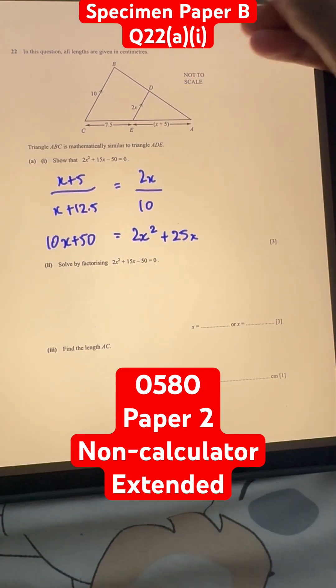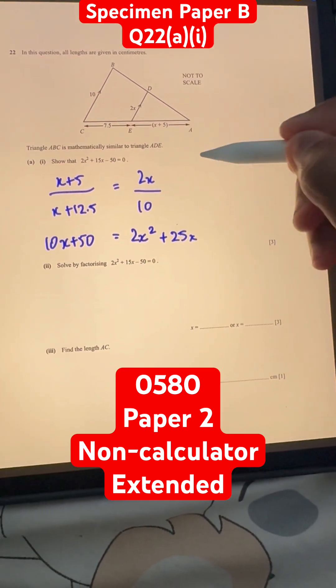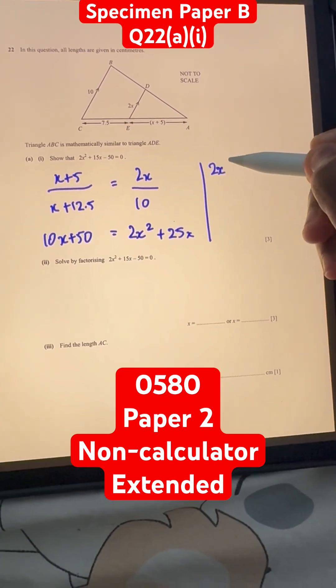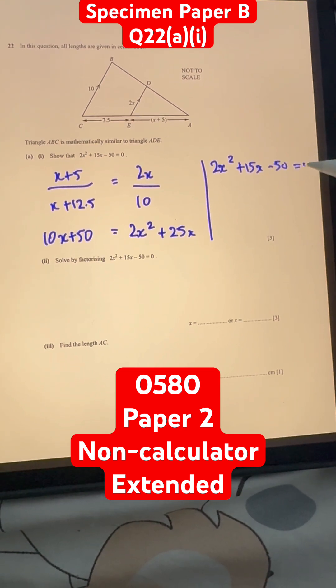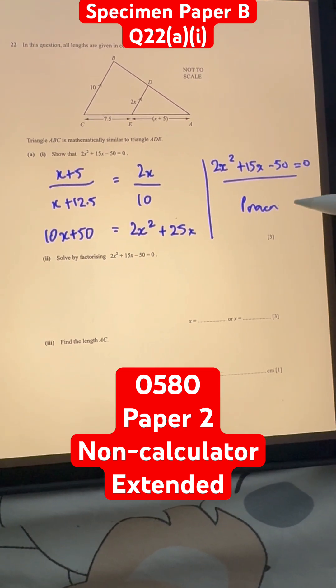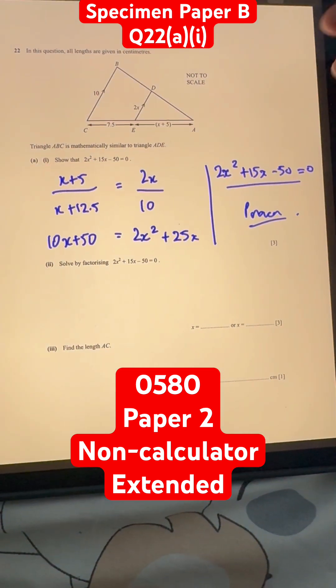And now, we can bring these to this side. So, 2x squared plus 15x minus 50 is equal to 0, and we have proven what we need to prove in the question. So, this will be our answer.